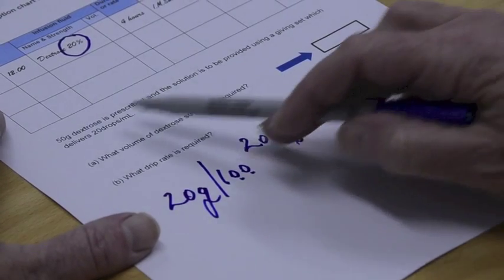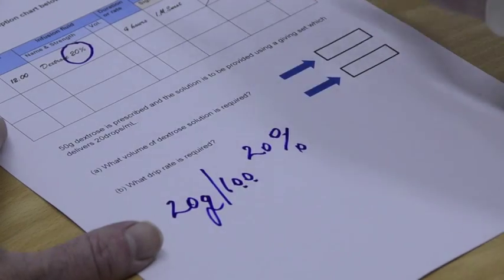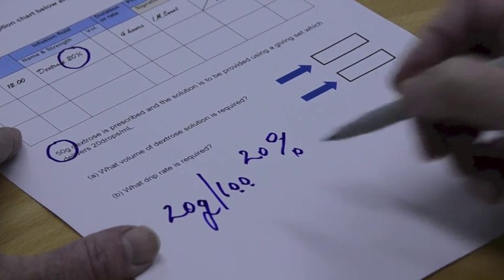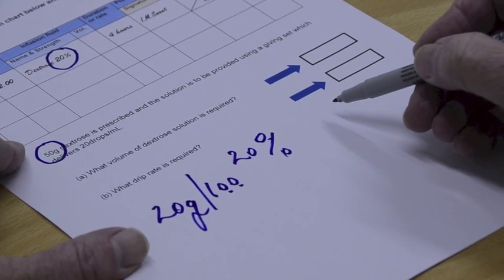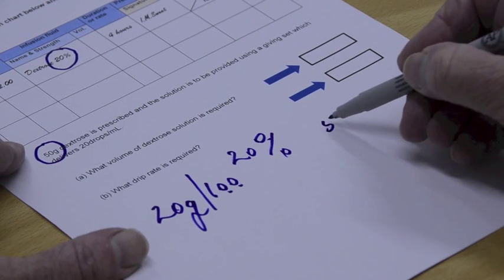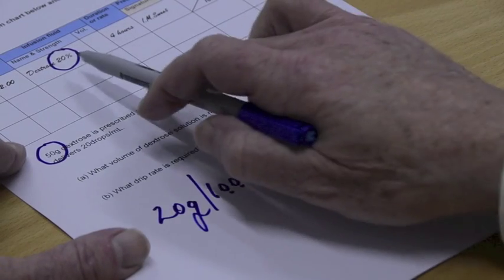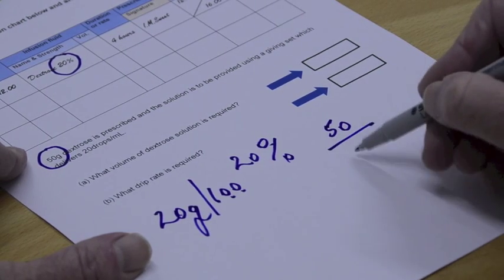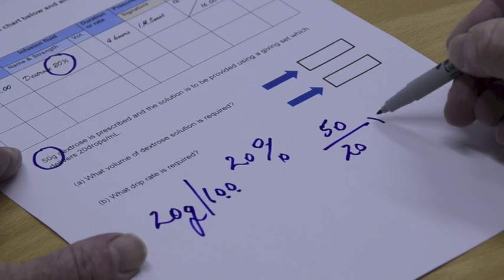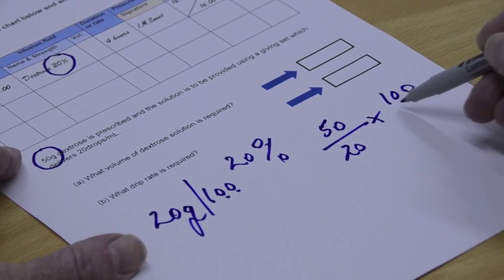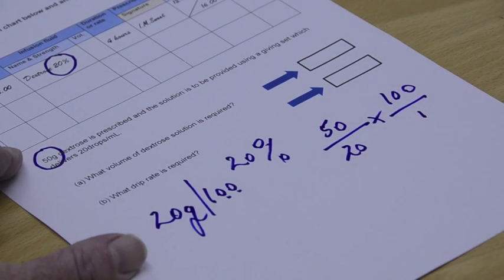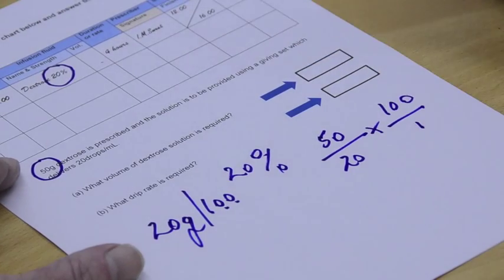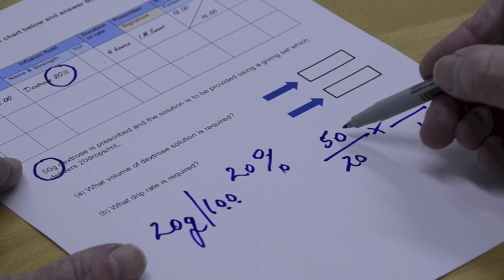Now we are prescribed here 50 grams of dextrose. So it goes back to the same old NHS idea that what has been prescribed or N if you like is 50. What have I got when I got 20% which means 20 grams in 100. So I've got 20 need have in our solution of 100. And that's all we have to do to work that first part of the question out. Don't start working out what the drip rate is required until you know what the volume is. So this should be fairly straightforward I would think.